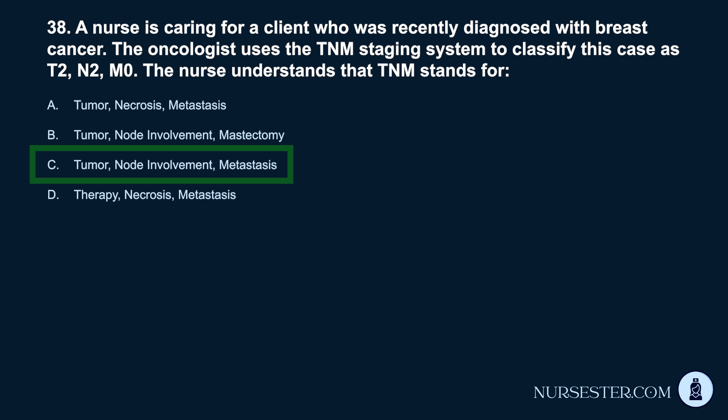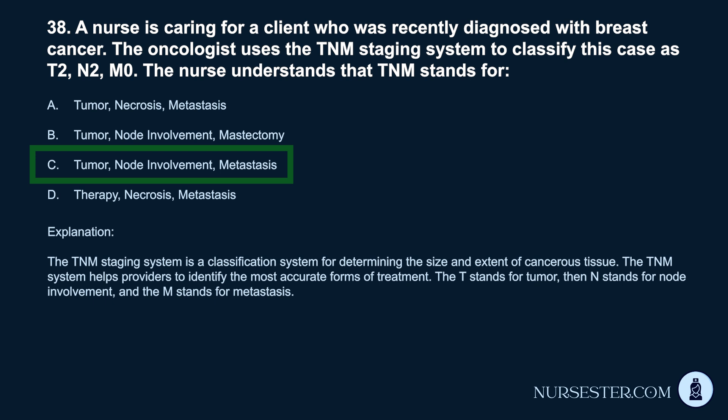Correct answer: C. Tumor, node involvement, metastasis. The TNM staging system is a classification system for determining the size and extent of cancerous tissue, and helps providers identify the most accurate forms of treatment. T stands for tumor, N stands for node involvement, and M stands for metastasis.